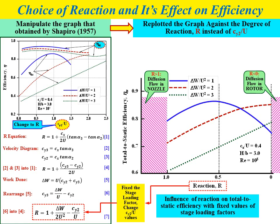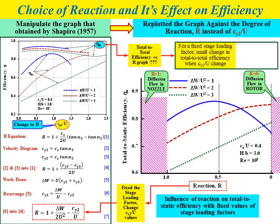Going back to the Shapiro 1957 graph, there are two types of efficiency: total-to-static and total-to-total. You may ask why we don't need to replot the graph for total-to-total efficiency versus degree of reaction. Looking at the Shapiro graph, for a fixed stage loading factor there is only a small change in total-to-total efficiency when Cy2 divided by U changes. Therefore, we conclude that total-to-total efficiency is not greatly affected by the choice of reaction, so there is no need to replot it.